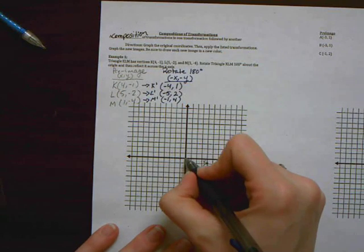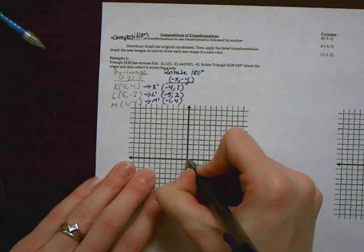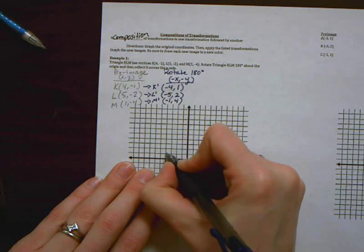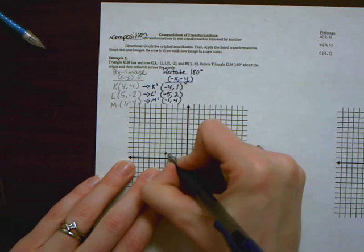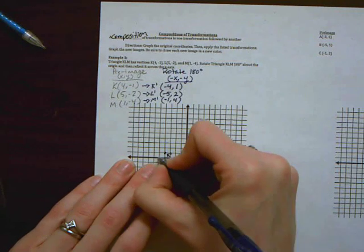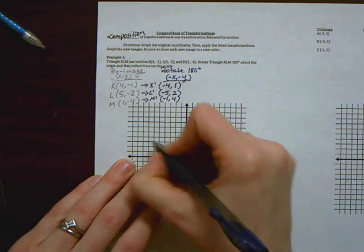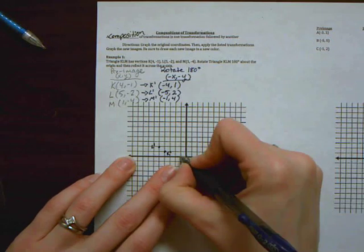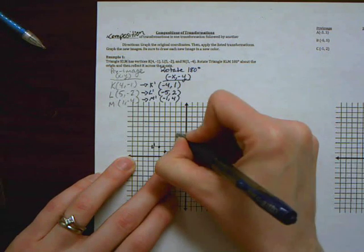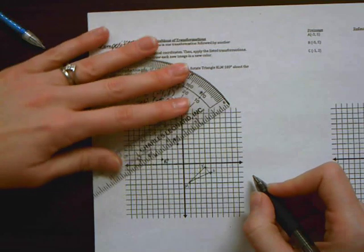The order stays the same. All right. So let's graph this. So I'm going to negative 4 plus 1. That is K prime. Negative 5 positive 2 is L prime. And negative 1 positive 4 is M prime.